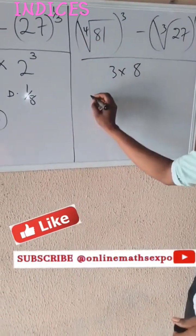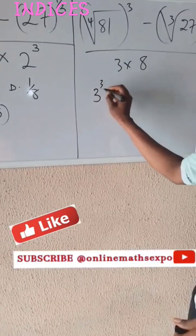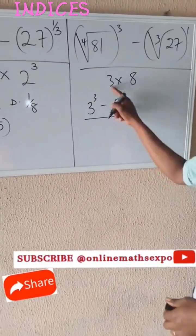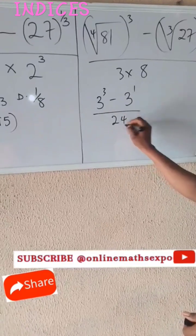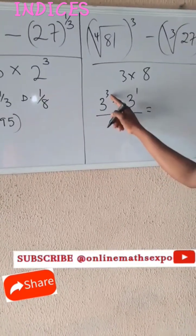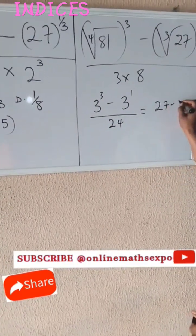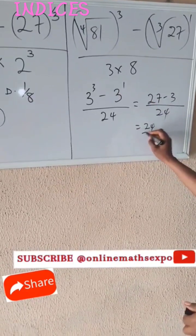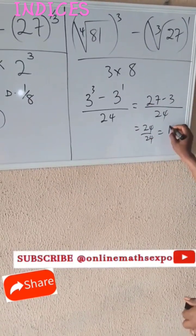4th root of 81 will give us 3 raised to power 3. Minus cube root of 27 is 3 raised to power 1. 3 times 8 will give us 24. That will give us 3 raised to power 3 is 27 minus 3, all over 24. This will give us 24 over 24, and that is 1.